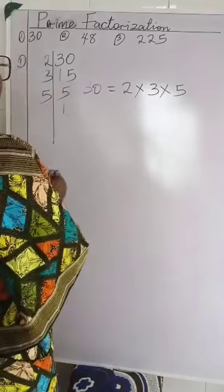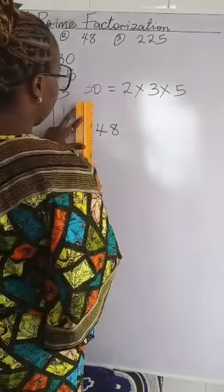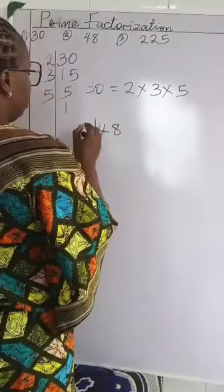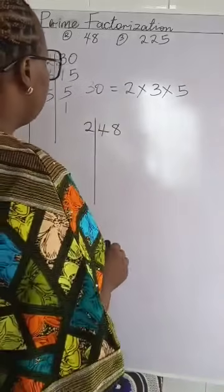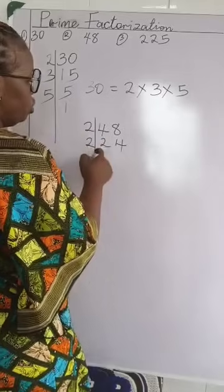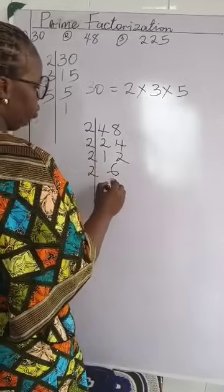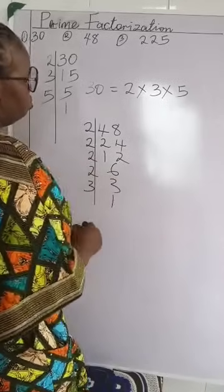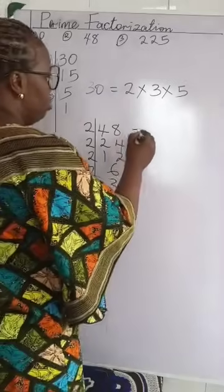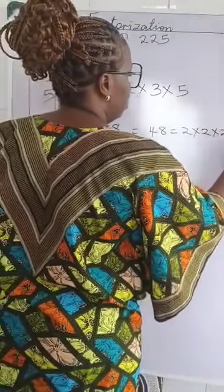Let's look at number 2 — we have 48. We are still using 2. 2 going into 48 will give us 24. And 2 going into 24 will give us 12. 2 here will give us 6. 2 here will give us 3. And then we use 3, which gives us 1. So what is the prime factorization of 48? We are going to have 48 equals 2 times 2 times 2 times 2 times 3.